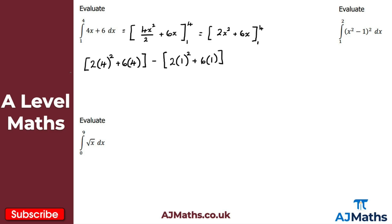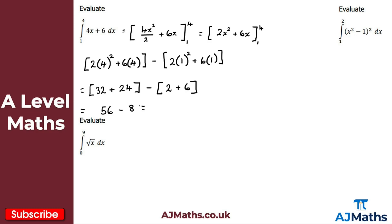Simplifying: 2 times 4 squared gives 32, plus 6 times 4 gives 24, so the upper limit evaluates to 56. The lower limit gives 2 times 1 squared which is 2, plus 6 times 1 which is 6, totalling 8. So we get 56 minus 8, which gives us 48. If we integrate 4x plus 6 from 1 to 4 with respect to x, the answer is 48.